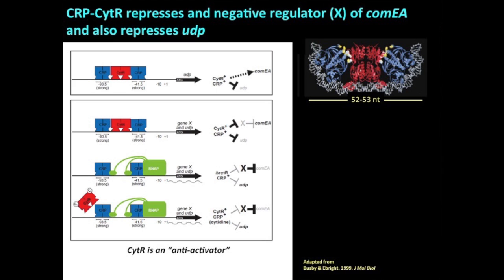There is a small set of promoters in E. coli that have two CRP binding sites positioned exactly 52 to 53 nucleotides apart. The model shown in E. coli is that CytR nuzzles itself right between these two CRP dimers, and via protein-protein interactions it prevents recruitment of RNA polymerase. So for genes like UDP, when CytR is present, the UDP gene is turned off because you can't recruit polymerase. When you delete CytR, polymerase can be recruited and the gene gets turned on.